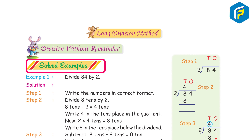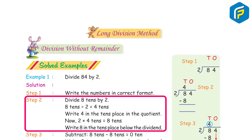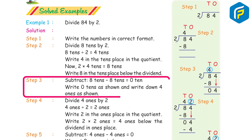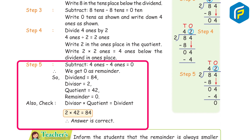Long division method — division without remainder. Solved example. Example 1: Divide 84 by 2. Step 1: Write the numbers in correct format. Step 2: Divide 8 tens by 2 — 8 ÷ 2 = 4 tens. Write 4 in the tens place of the quotient. 2 × 4 = 8; write 8 below the dividend. Step 3: Subtract — 8 − 8 = 0; bring down 4 ones. Step 4: Divide 4 ones by 2 — 4 ÷ 2 = 2 ones. Write 2 in the ones place. Step 5: Subtract — 4 − 4 = 0. Remainder is 0. Dividend 84 ÷ divisor 2 = quotient 42.